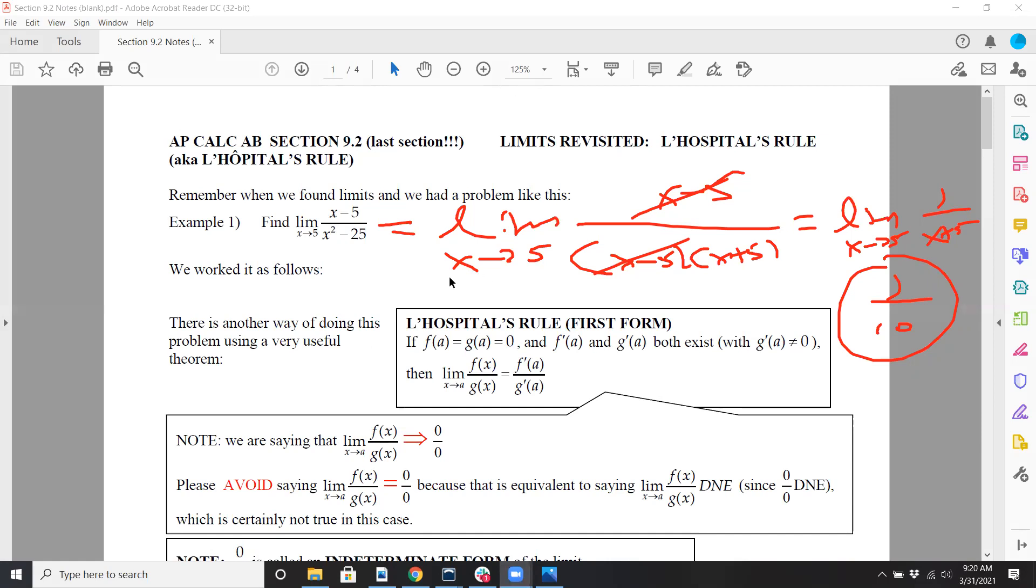What you do is you plug in whatever a is, what x is approaching. You plug into both functions, f(a) and g(a). If both of them happen to be 0, then you have the luxury of taking the derivative of both numerator and denominator separately. You take the derivative of numerator and denominator separately, and then plug in whatever a is. And if it works out, then you're good. That's it. You're done.